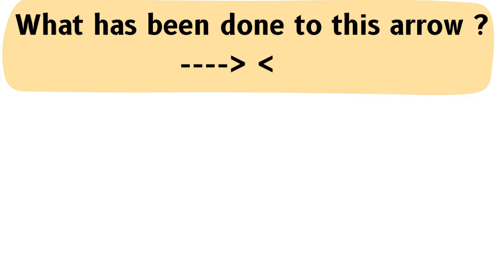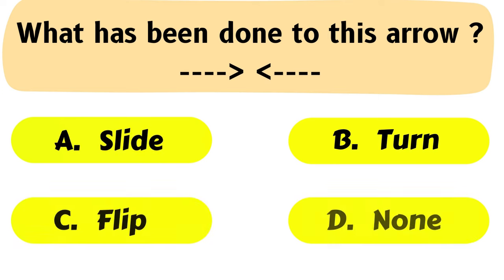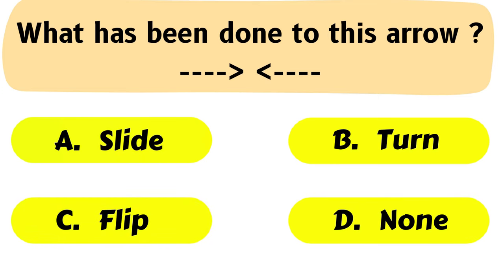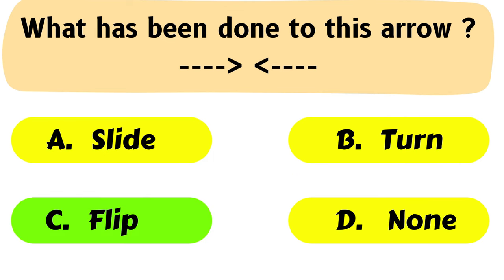Question No. 35: What has been done to this arrow? The correct answer is Option C: Flip.